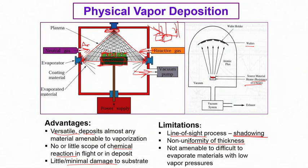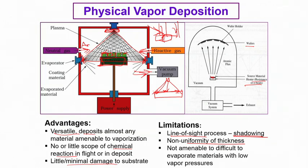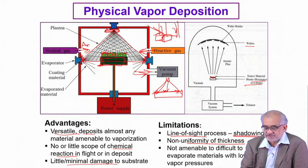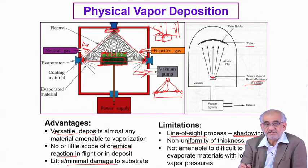There could also be non-uniformity of thickness. If you are coating a wide area with only a single evaporator, the rate at which species arrive at the centre versus the periphery will not be the same, so coating thickness may vary. This is also difficult for materials like tungsten itself, since its melting and vaporization temperatures are very high. You would rather choose materials that are easy to evaporate — with high vapour pressure and relatively low boiling temperatures.